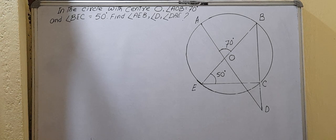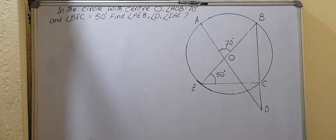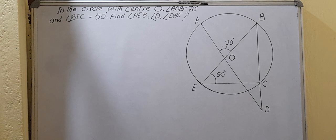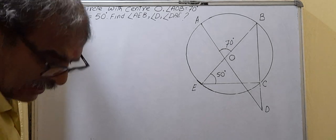The question is: given a circle with center O, angle AOB = 70 degrees and angle BC = 50 degrees. Find angle AEB and angle DAE.